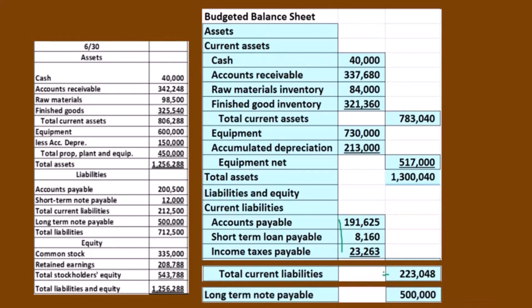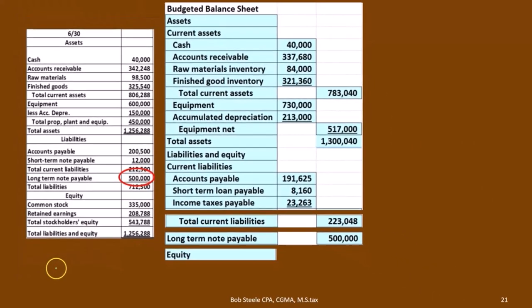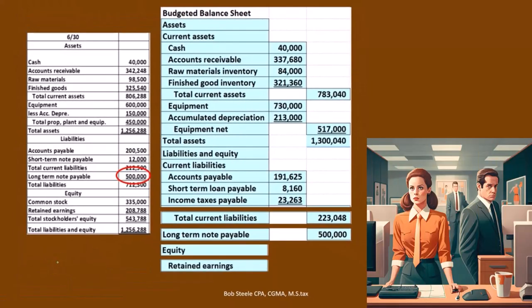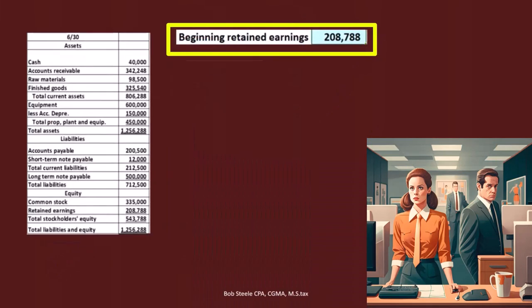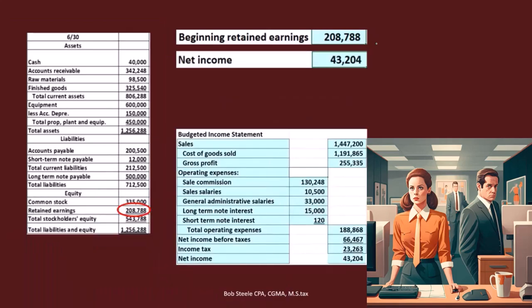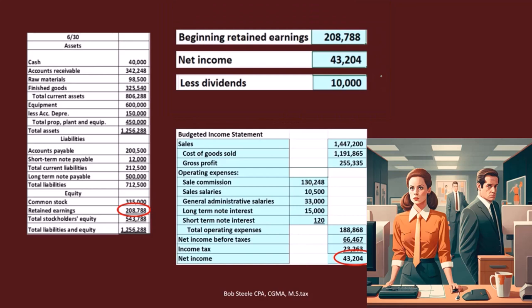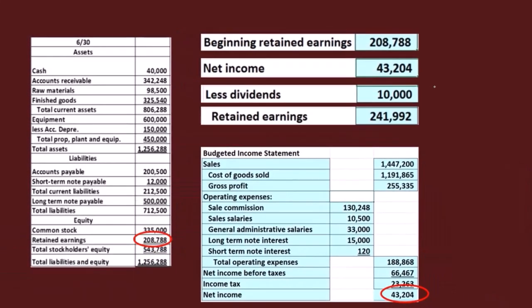The long-term note payable doesn't change in this problem — it was $500,000 at the beginning of the period. We're paying interest only during this quarter, so the principal does not go down, and we're still at $500,000. Moving to the equity section, retained earnings is calculated as beginning retained earnings from last period's balance sheet, plus net income from the income statement, minus dividends paid. We budgeted $10,000 in dividends paid, as recorded in the cash budget.